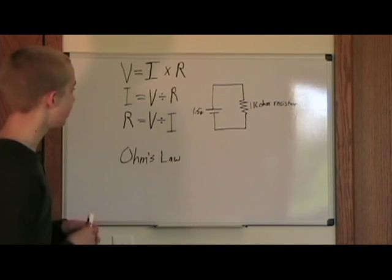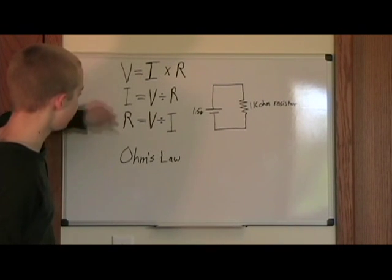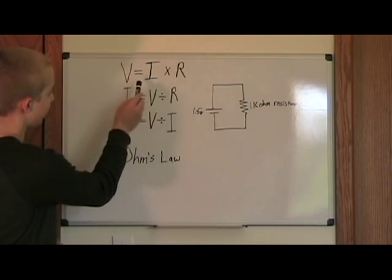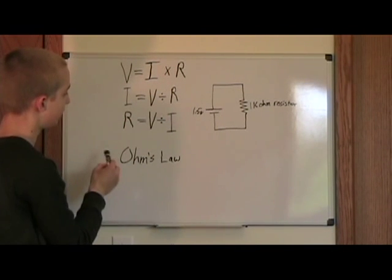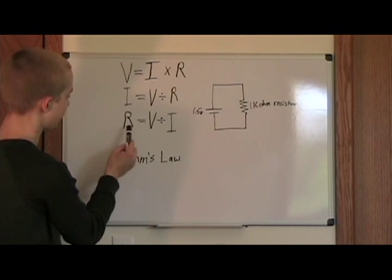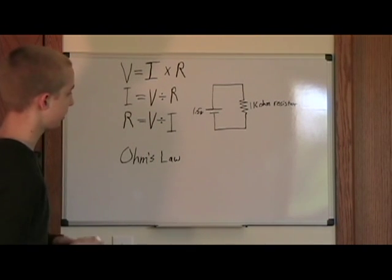As you can see here, Ohm's Law can pretty much be summed up by these three equations. Voltage equals current times resistance, current equals voltage divided by resistance, and resistance equals voltage divided by current.